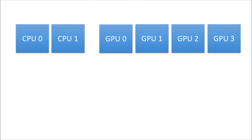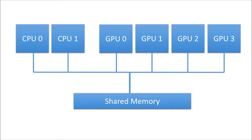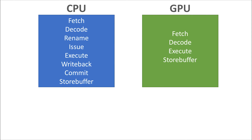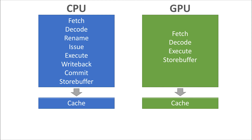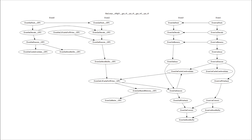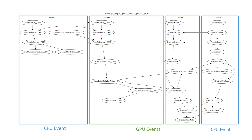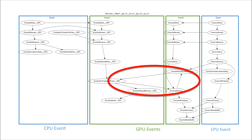This loop shows a violation in memory consistency. The heterogeneous architecture in the SURE project is like this: we have two CPU cores and four GPU cores, and they access the shared memory. The pipeline stages in the CPU and GPU are shown here. Each of them accesses its own cache, and the caches are connected to a shared memory. This is my result. This graph contains two CPU events and two GPU events, and the loop in the graph shows the architecture has a bug in memory consistency.